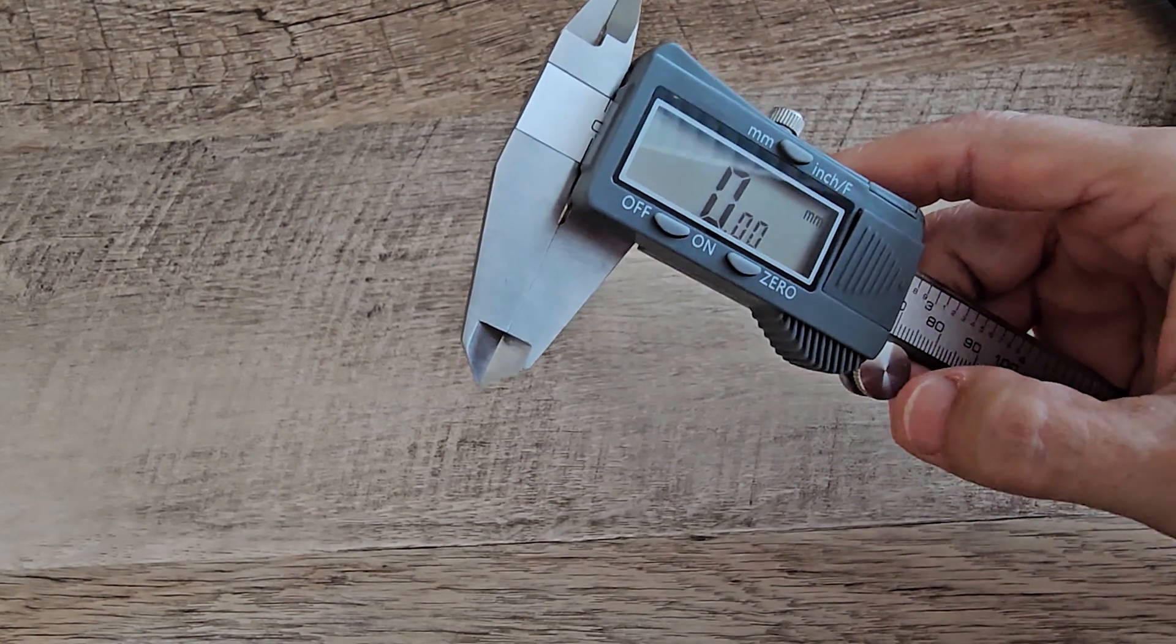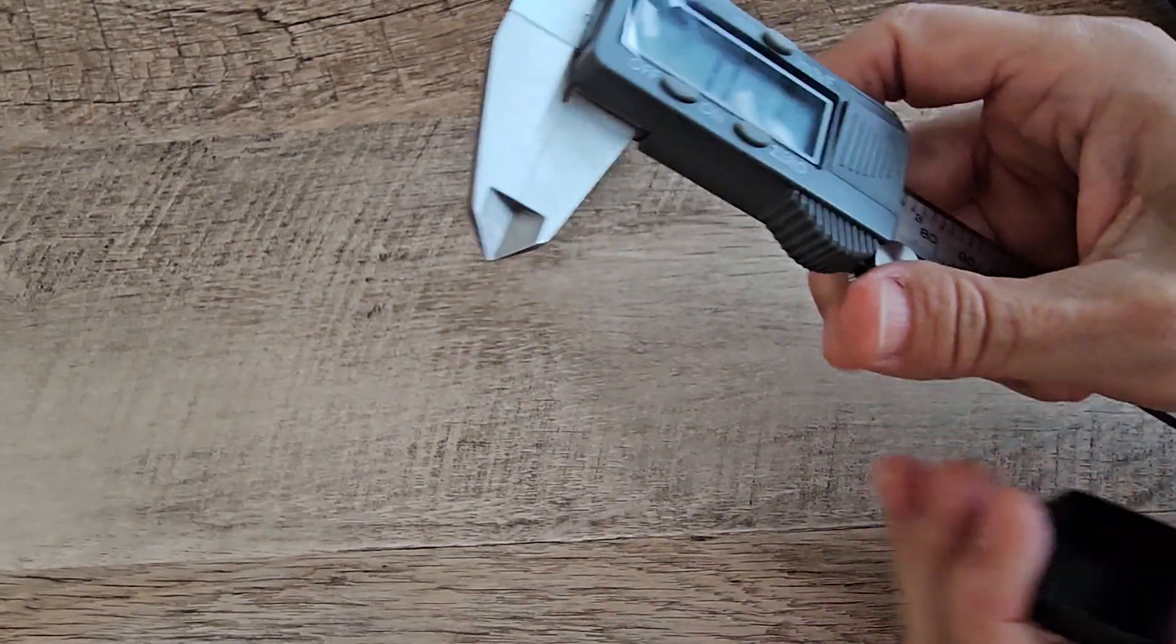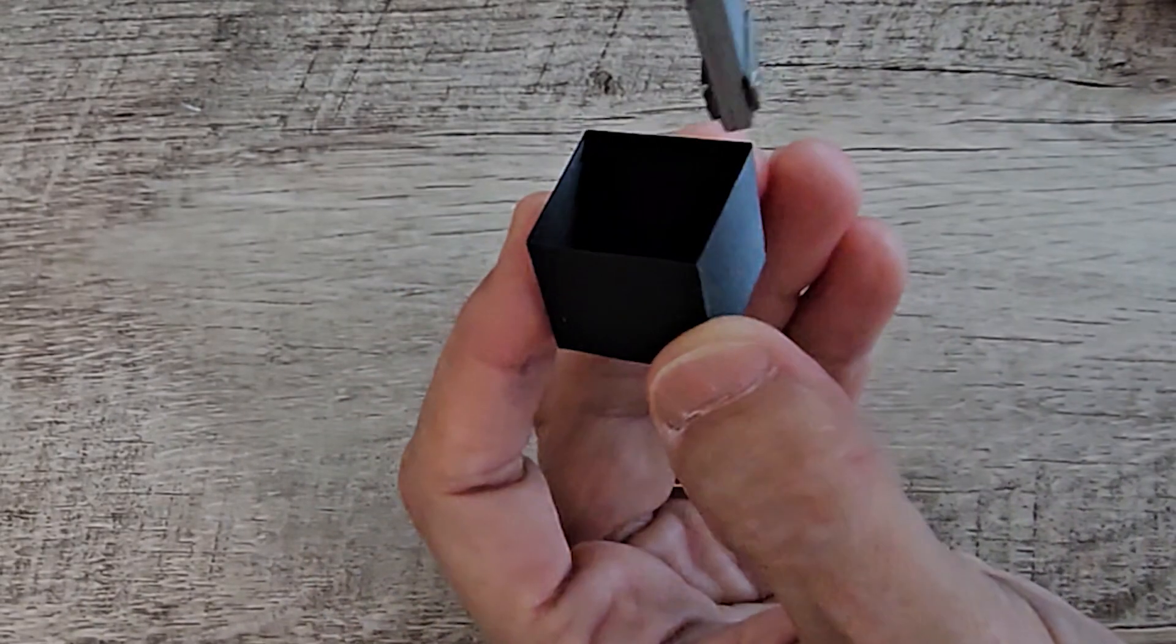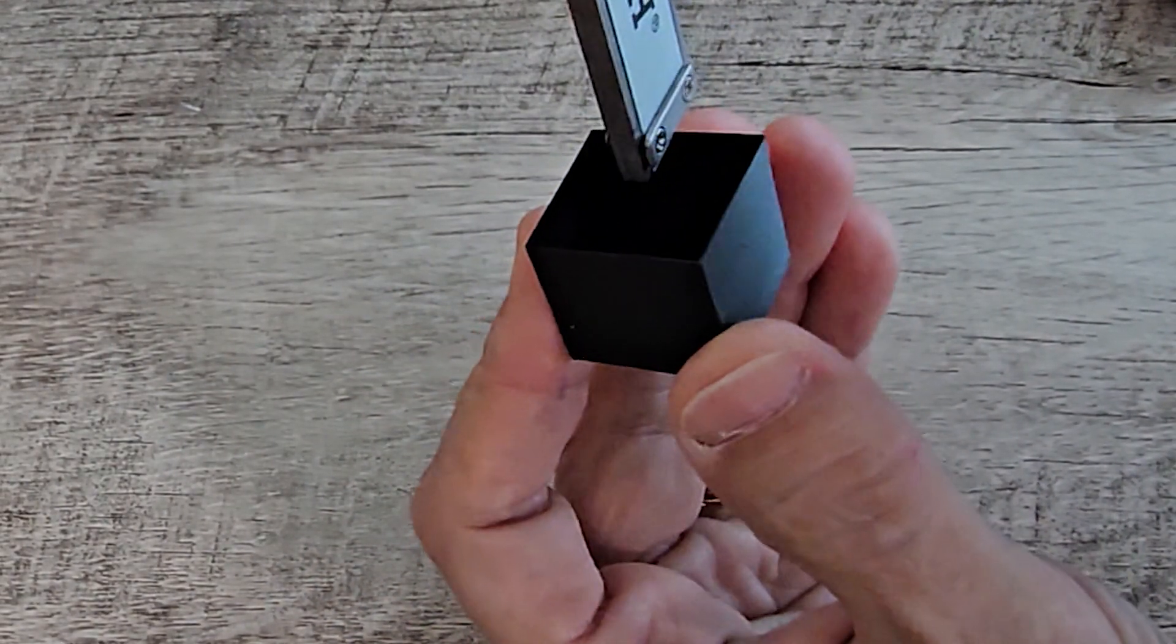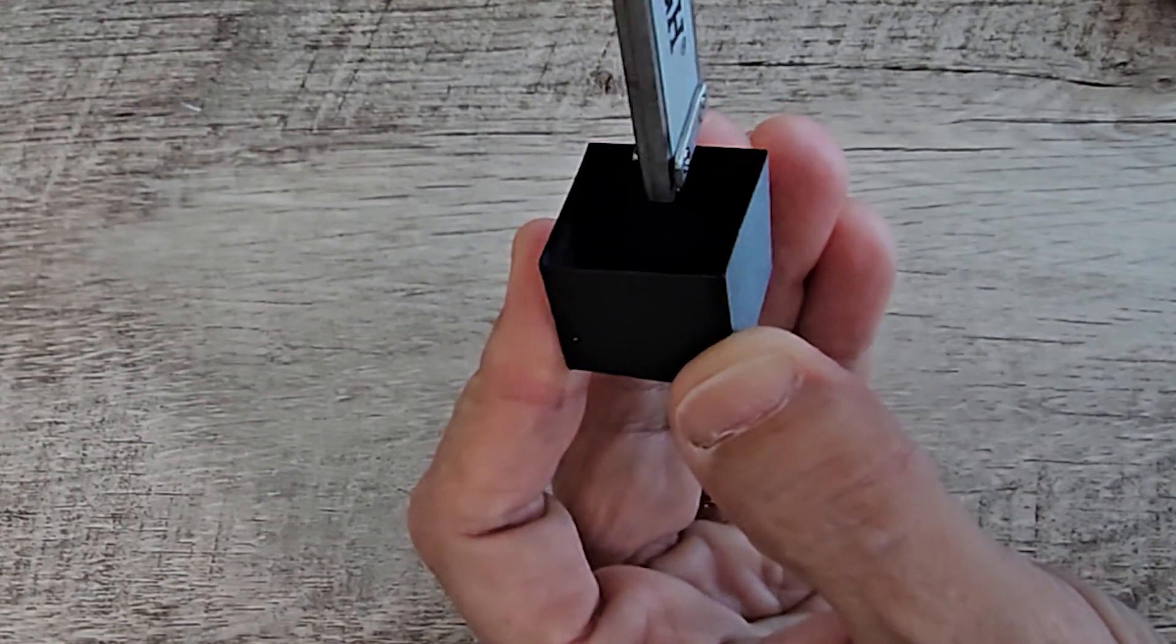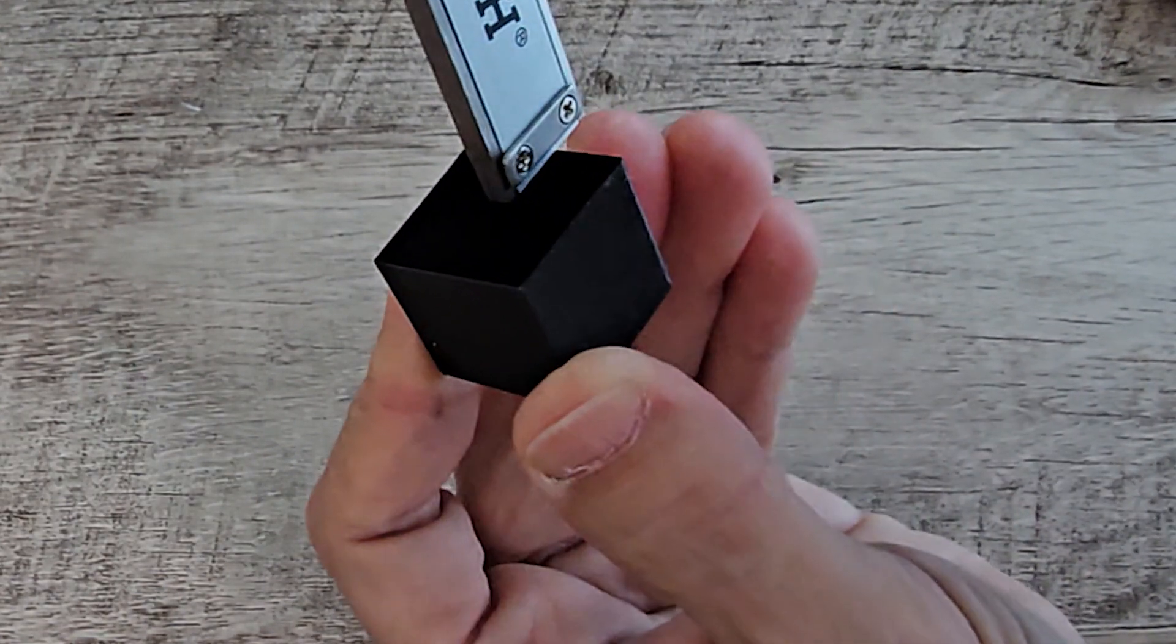An example of a depth measurement. Again, make sure you've zeroed out. I'm going to use this little printed cube. And I'm just going to extend the depth measurement until it hits the bottom.